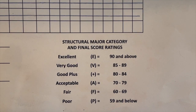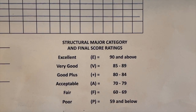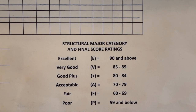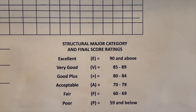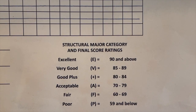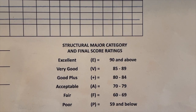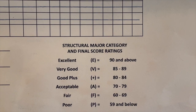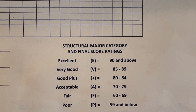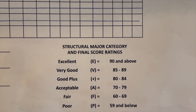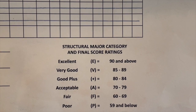The second half of the linear appraisal score sheet covers structural categories scored as: P for poor, F for fair, G for good (now updated from 'acceptable'), plus meaning good plus, V for very good, and E for excellent. Those are somewhat more straightforward than the linear traits, which can be a bit confusing.